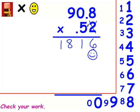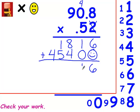Now I'm going to multiply by 5. 5 times 8 is 40. 5 times 0 is 0, plus that 4 is 4. 5 times 9 is 45. Now I'm going to add both rows together. Because I'm multiplying with decimals, I go back up to the problem and count how many numbers are behind the decimal point — that's how many have to be behind it in the answer. Your answer is 47 and 216 thousandths.